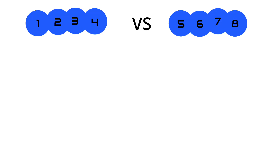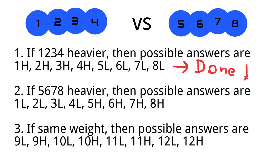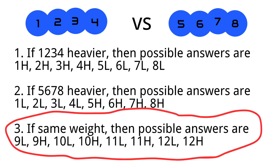We're about two-thirds done. The case where 5,6,7,8 is heavier is symmetric and uses the same logic. What's left is the case where 1,2,3,4 equals 5,6,7,8 — meaning the odd ball is among balls 9, 10, 11, and 12.